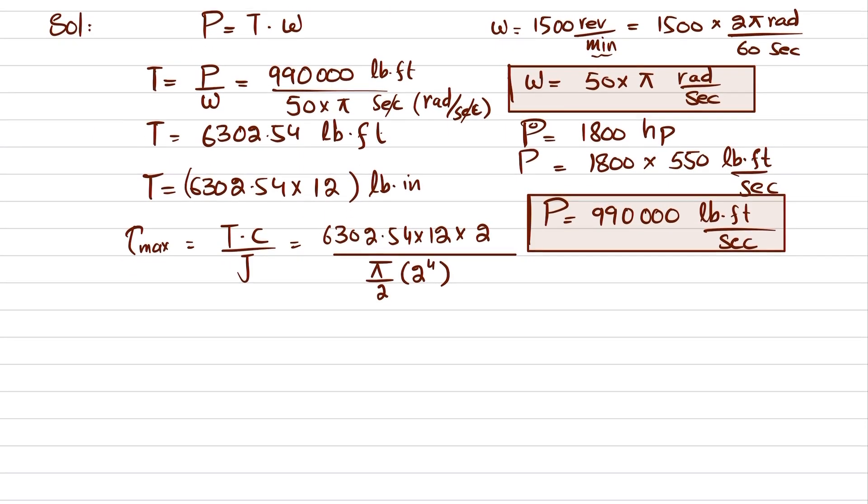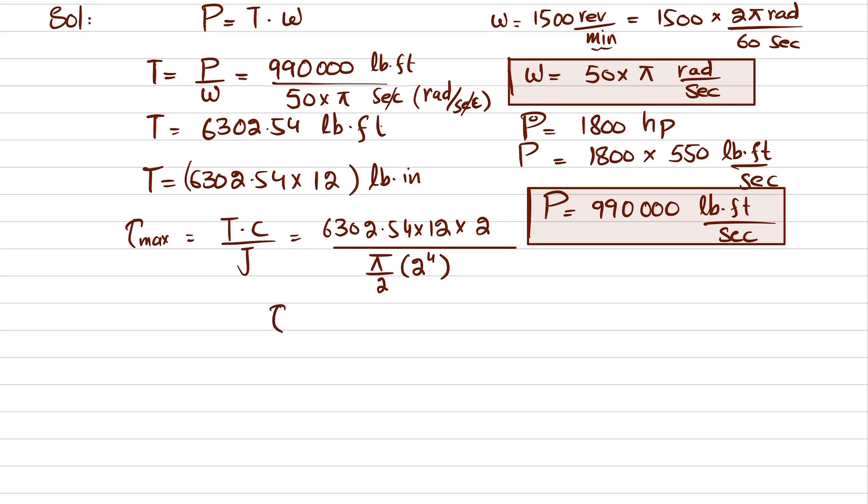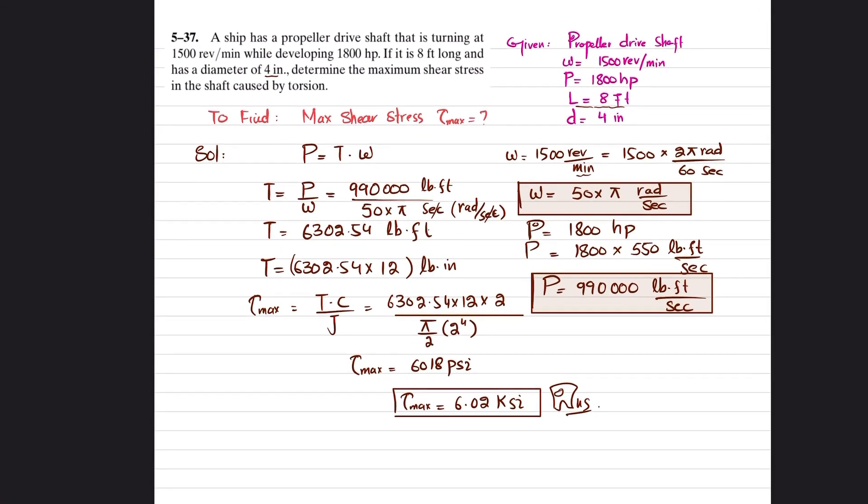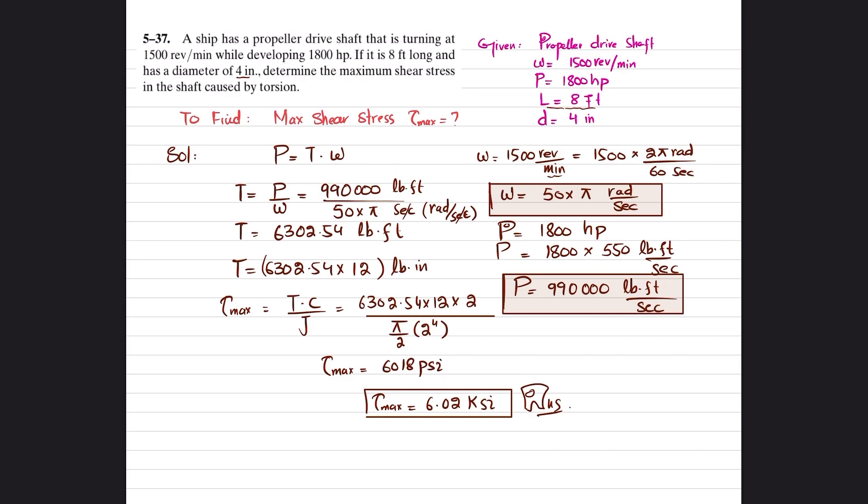When you solve this, you will get maximum shear stress equal to 6018 psi, or in terms of ksi, it will be equal to 6.02 if you round it.